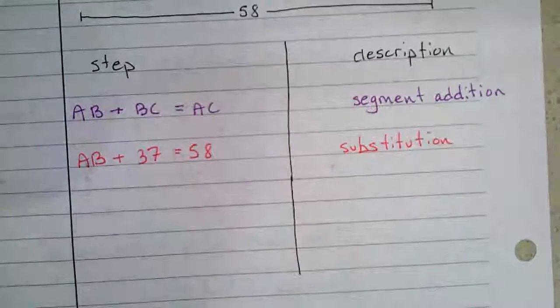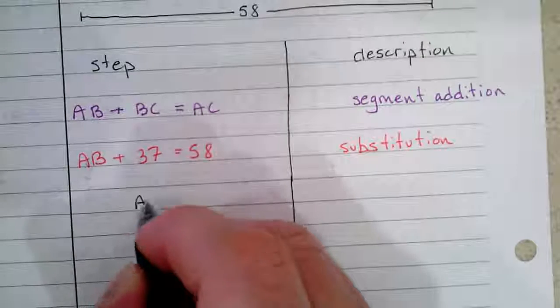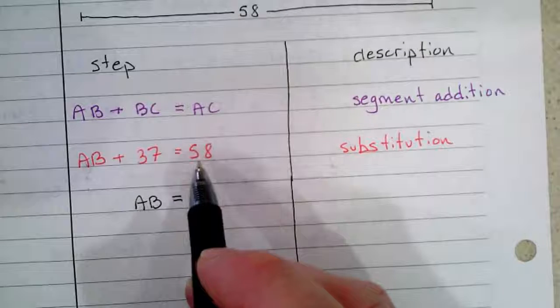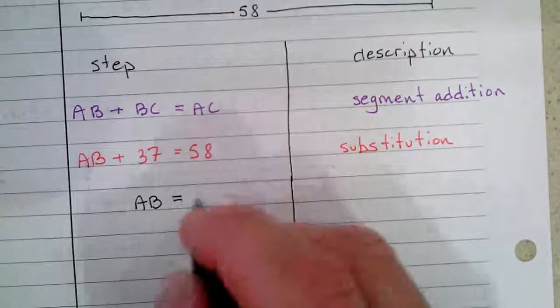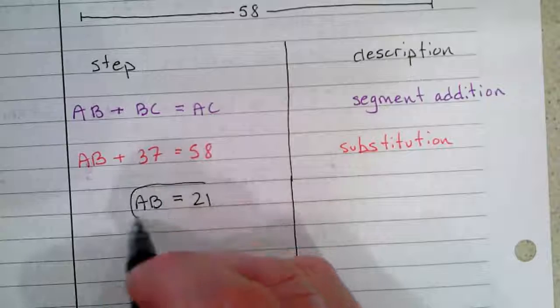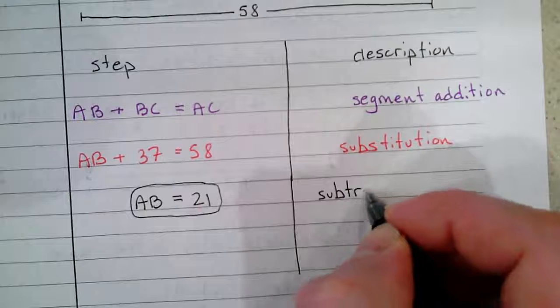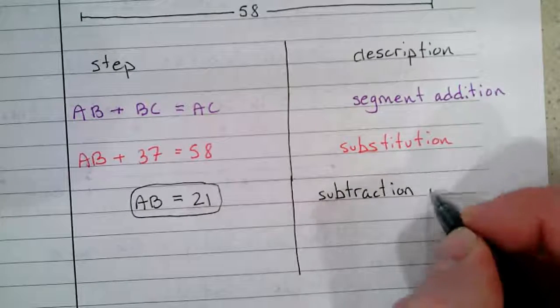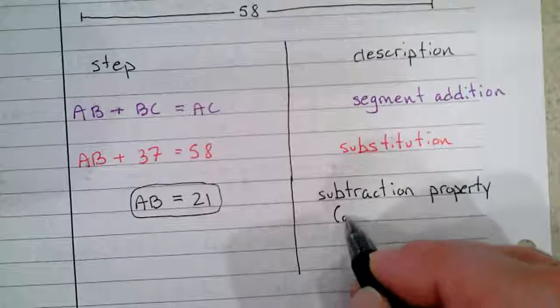All right, next up, just going to subtract 37 from each side, and that gives us AB equals—let's see, 58 take away 37 would be 21. And that's what we were looking for. And here we use the subtraction property of equality.